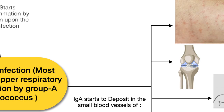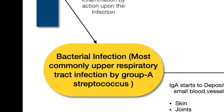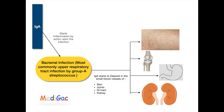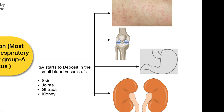HSP is most commonly caused by upper respiratory tract infections, which includes group A streptococcus infection. Then IgA antibody starts acting upon the infective organisms, and begins to deposit in various organs of the body — like skin, joints, kidney, and GI tract.